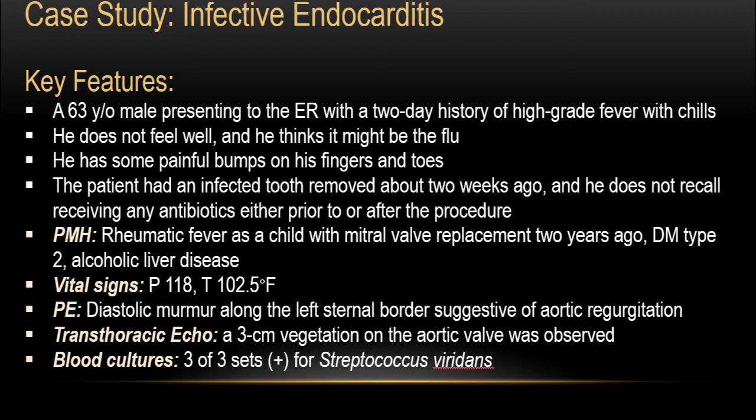On physical examination, a diastolic murmur along the left sternal border was detected, suggestive of aortic regurgitation. Transthoracic echo showed a 3 cm vegetation on the aortic valve — this vegetation represents infection, bacteria, and immune reaction on the aortic valve. Blood cultures were positive: three of three sets were positive for Streptococcus viridans.